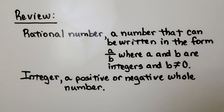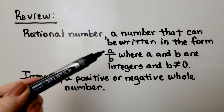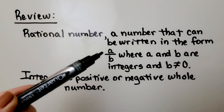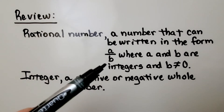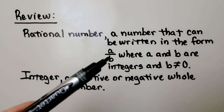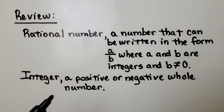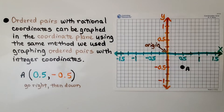For a quick review: a rational number is a number that can be written in the form a over b, where a and b are integers and b is not equal to zero. An integer is a positive or negative whole number. Ordered pairs with rational coordinates are graphed in the coordinate plane using the same method used for ordered pairs with integer coordinates.